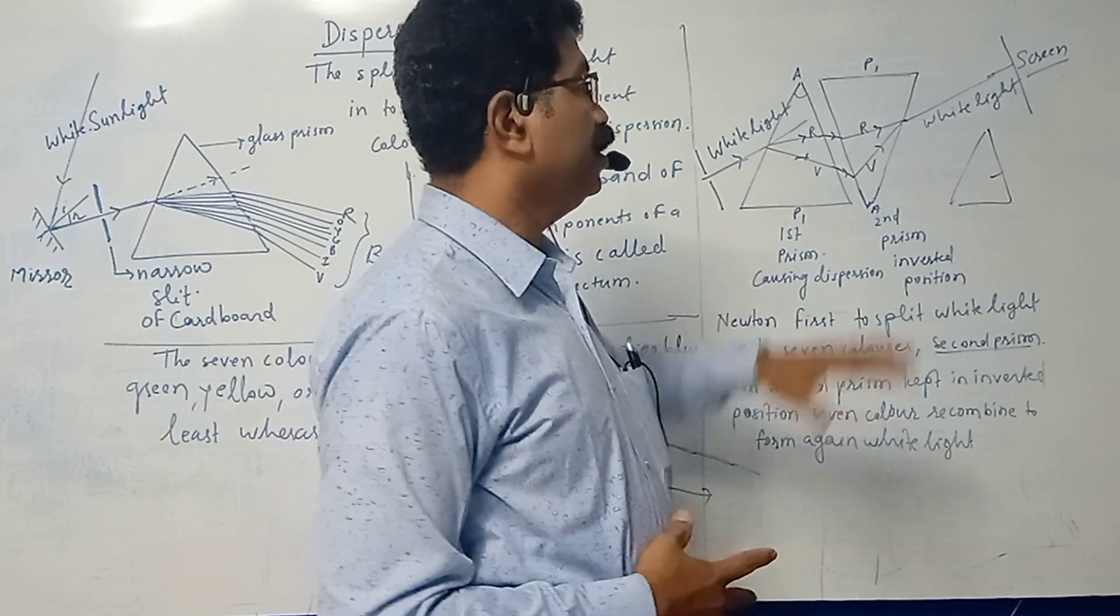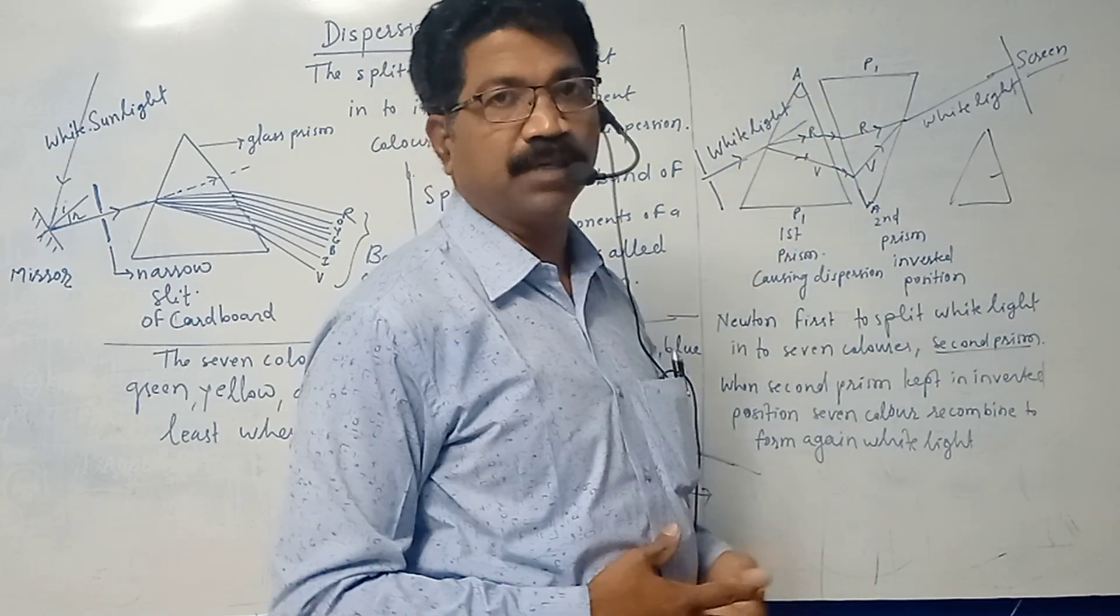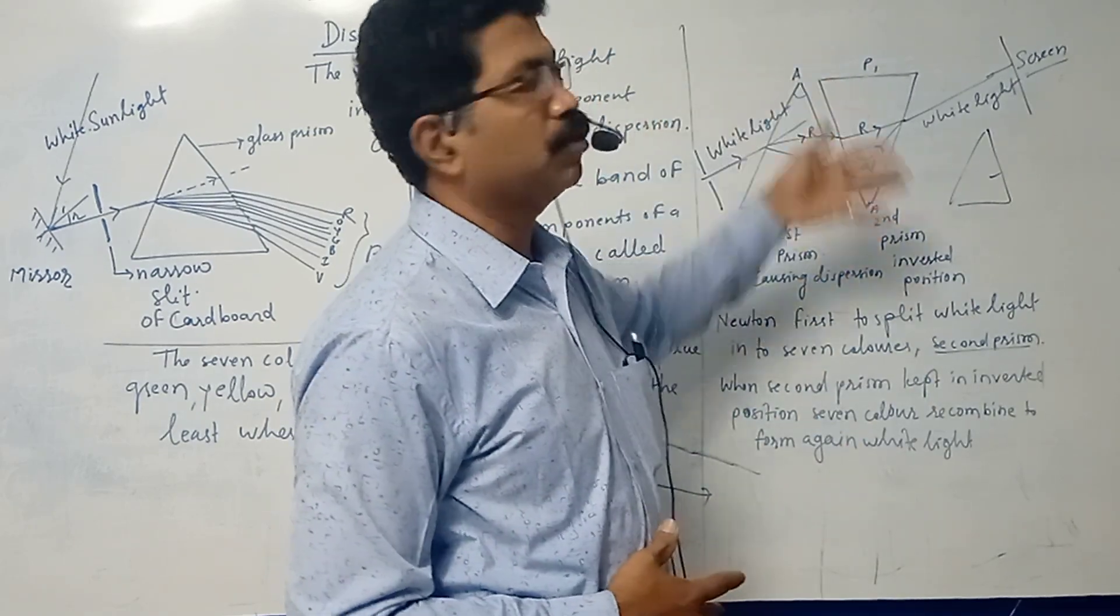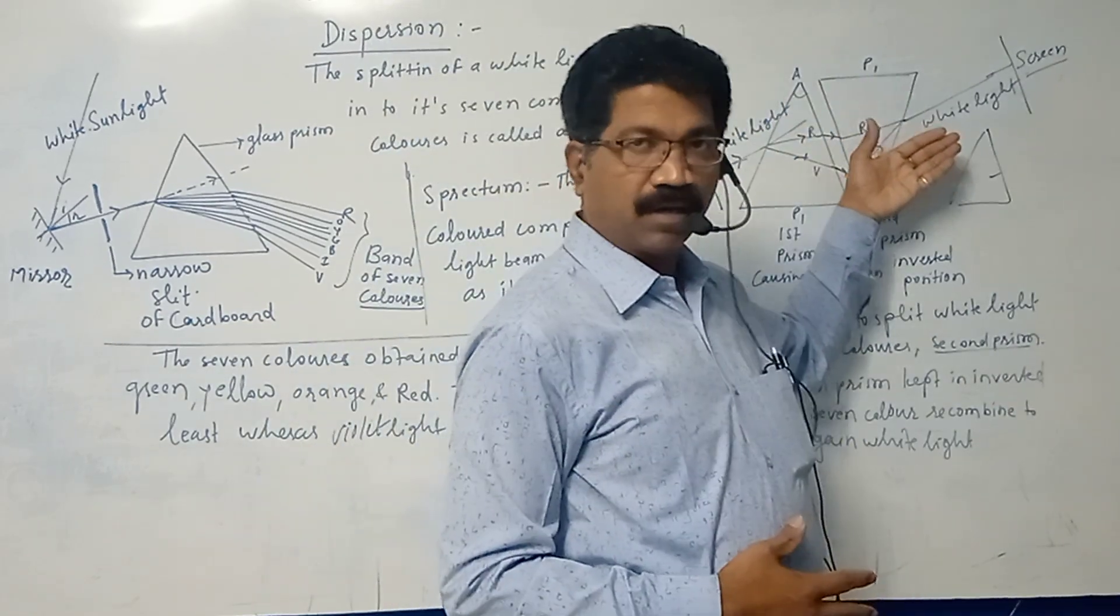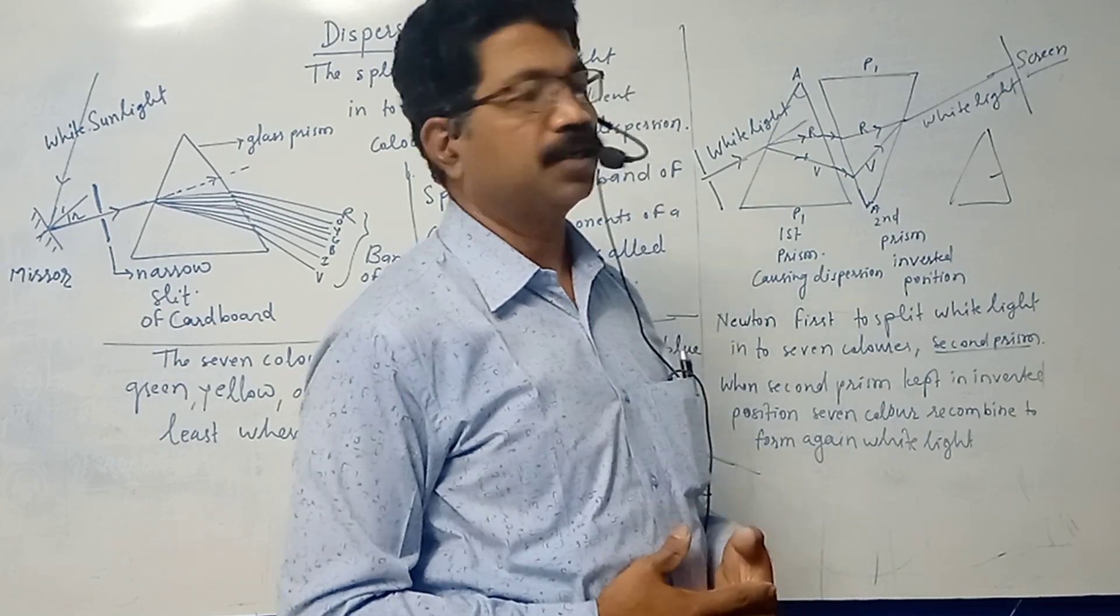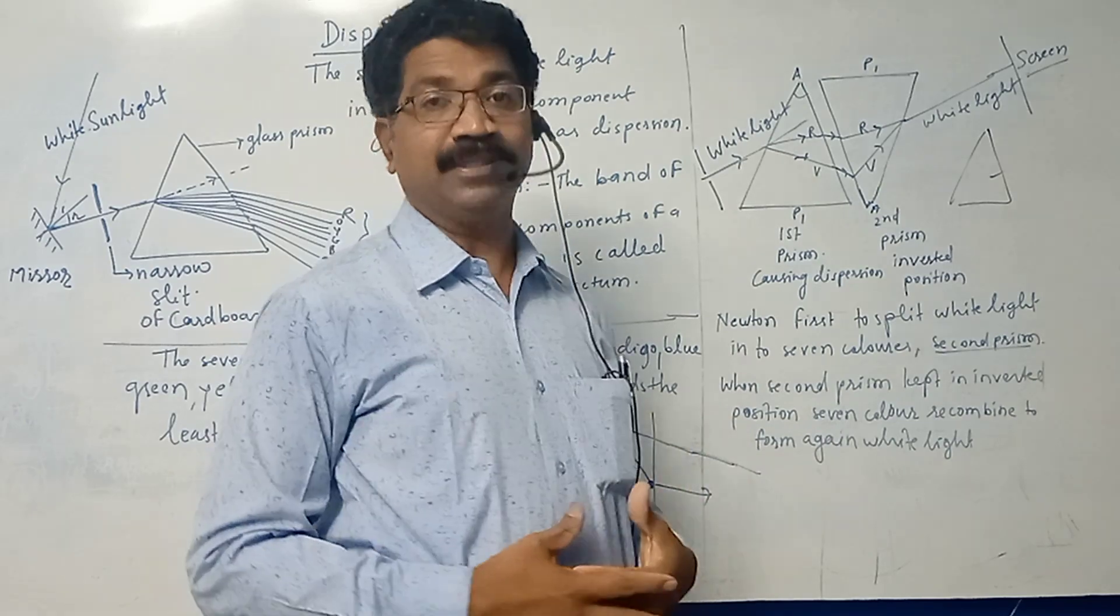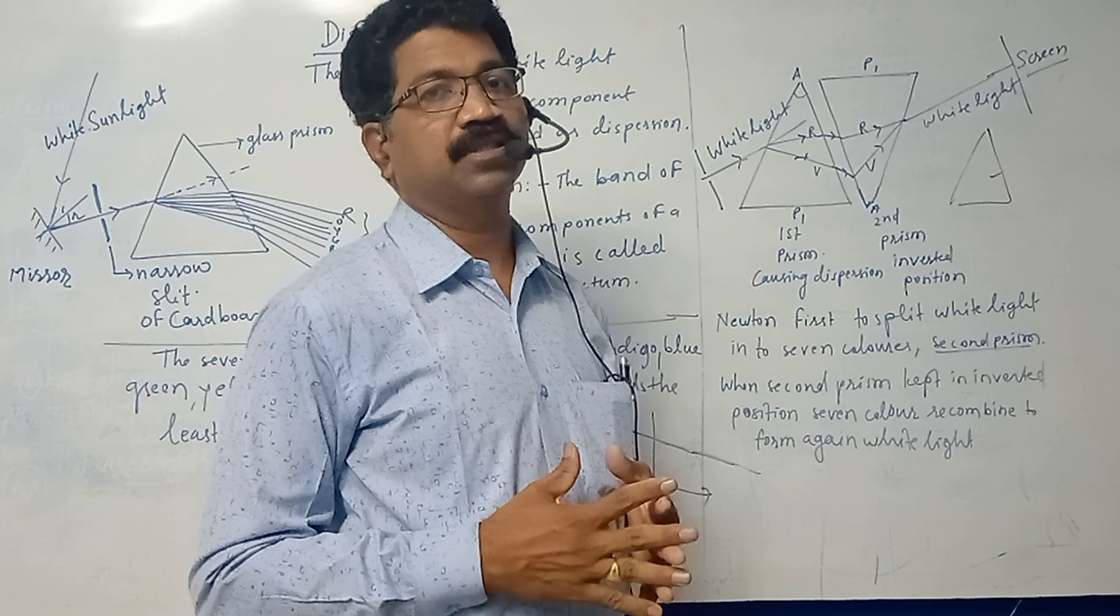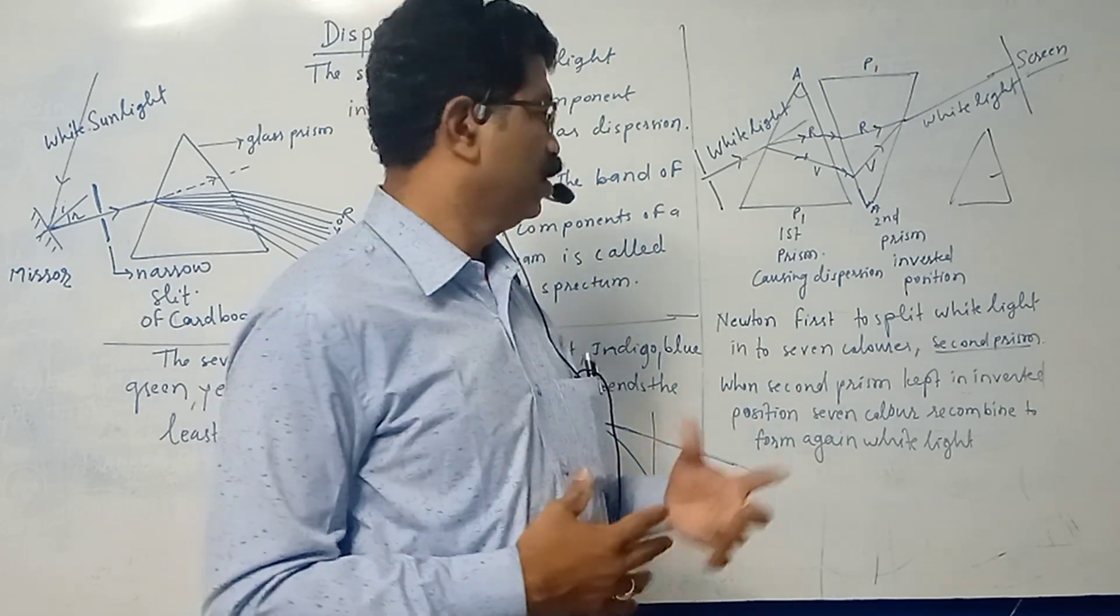He put the second prism in inverted position - first prism upright, second prism inverted. The white light was split up into seven colors. When these seven colors passed through the inverted prism, these colors were combined and again you obtain a white beam of light. This led Newton to conclude that white light consists of seven colors - a mixture of seven colors.